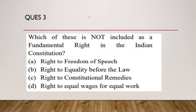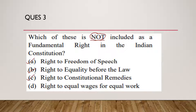Question number three asks: which of the following is NOT included as a fundamental right in the Indian Constitution? Always look for the word 'not' while attempting your exam. The first option is right to freedom of speech — contained in Article 19, so it is a fundamental right. Right to equality before law — every citizen, be it the prime minister or a local vegetable vendor, is equal in the eye of law, so this is also a fundamental right. Right to constitutional remedies — this is Article 32, given the status of heart and soul of the Constitution by Dr. B.R. Ambedkar. These three are the fundamental rights contained in Part Three of the Constitution.